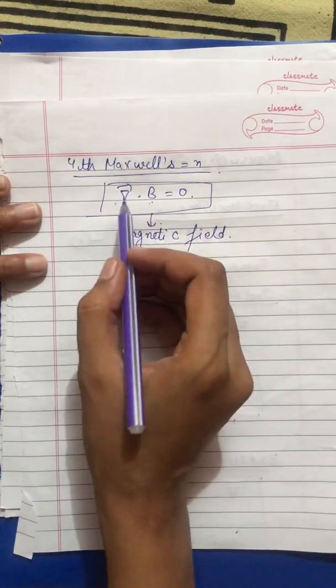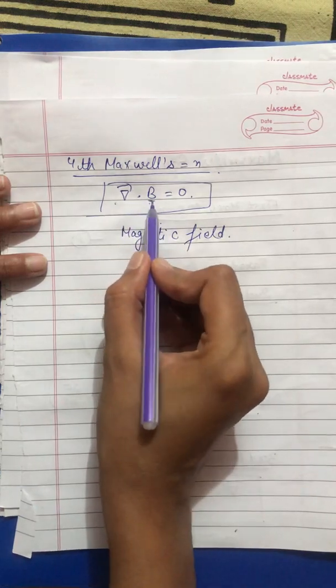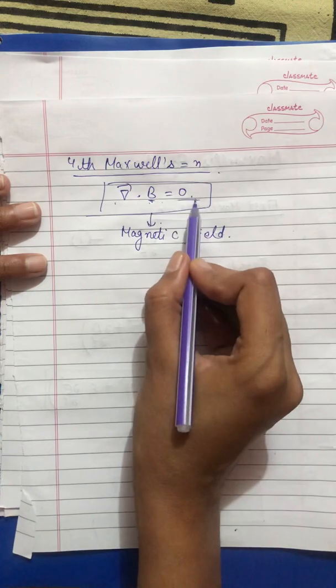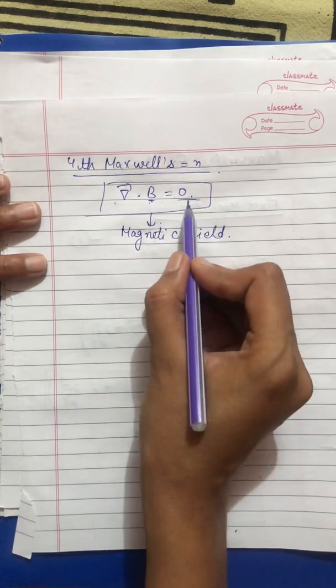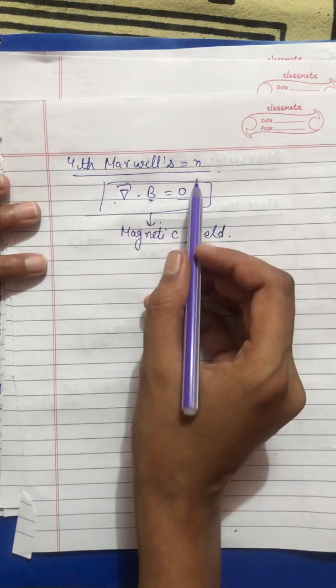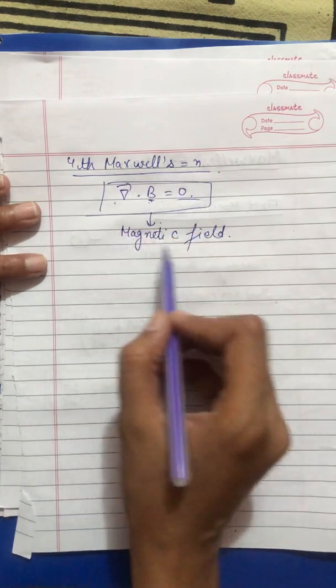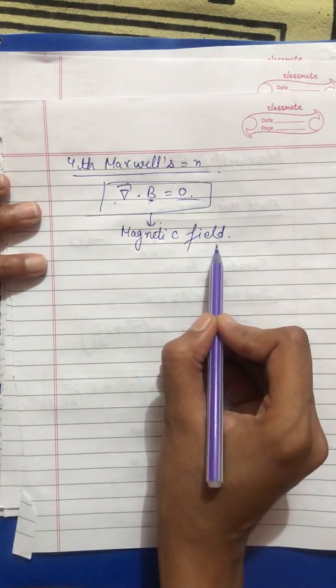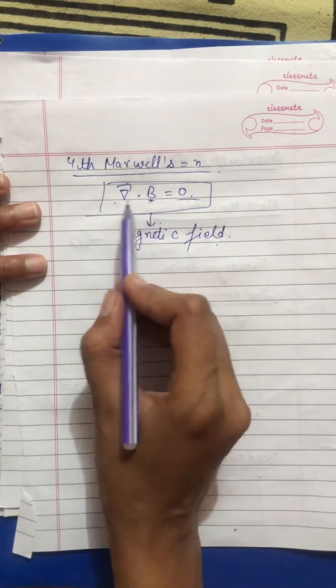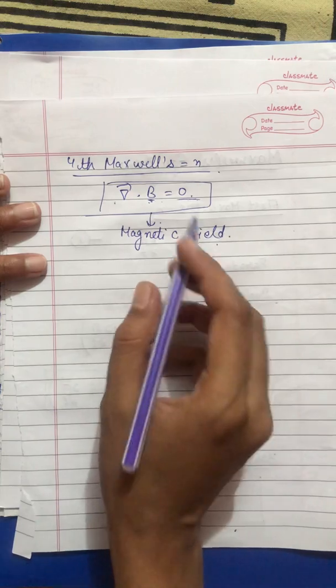From this we learn that total magnetic flux in any closed surface is zero. So del dot B is equals to zero. So you can write, this is a fourth Maxwell equation, and this is a general equation of magnetic field which states that the total magnetic flux over any closed surface is zero.